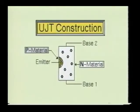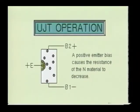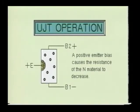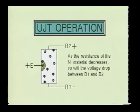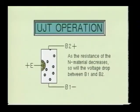The unijunction transistor is constructed of a bar of lightly doped N-type silicon with a small piece of heavily doped P-type material attached to one side. Since the silicon bar is lightly doped, it has a very high resistance. When a positive bias voltage is applied to the emitter, the P-N junction becomes forward-biased and current will flow through it. This causes the resistance of the N-type bar material to decrease. With the decrease in resistance, the voltage drop across the emitter base-1 junction also decreases, which in turn causes the P-N junction to become more heavily biased, leading to greater forward current flow and further reduction of bar resistance. This is the UJT's negative resistance region, which is its normal operating mode.